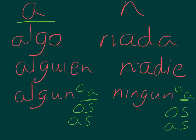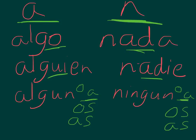So these are the A's — the positive words — and the N's — the negative words. Algo, nada: something, nothing. Algún, nadie: someone, no one. Algún, some. Ningún, none. And then you put on the O's and the A's and the plurals for what follows, for algún and ningún.